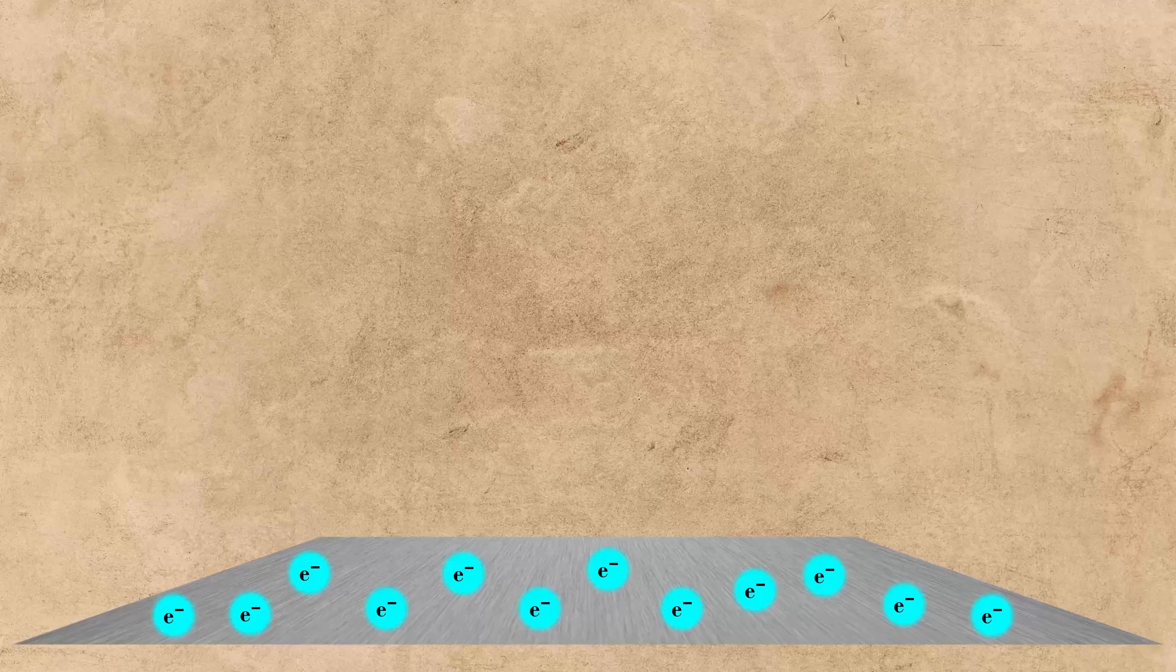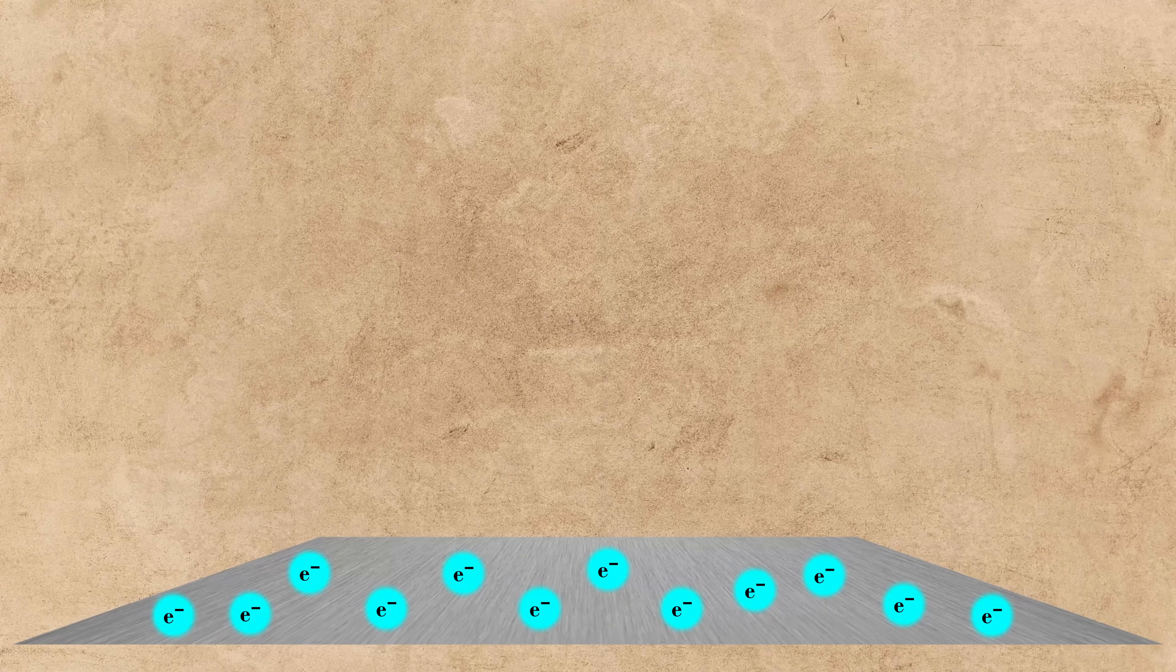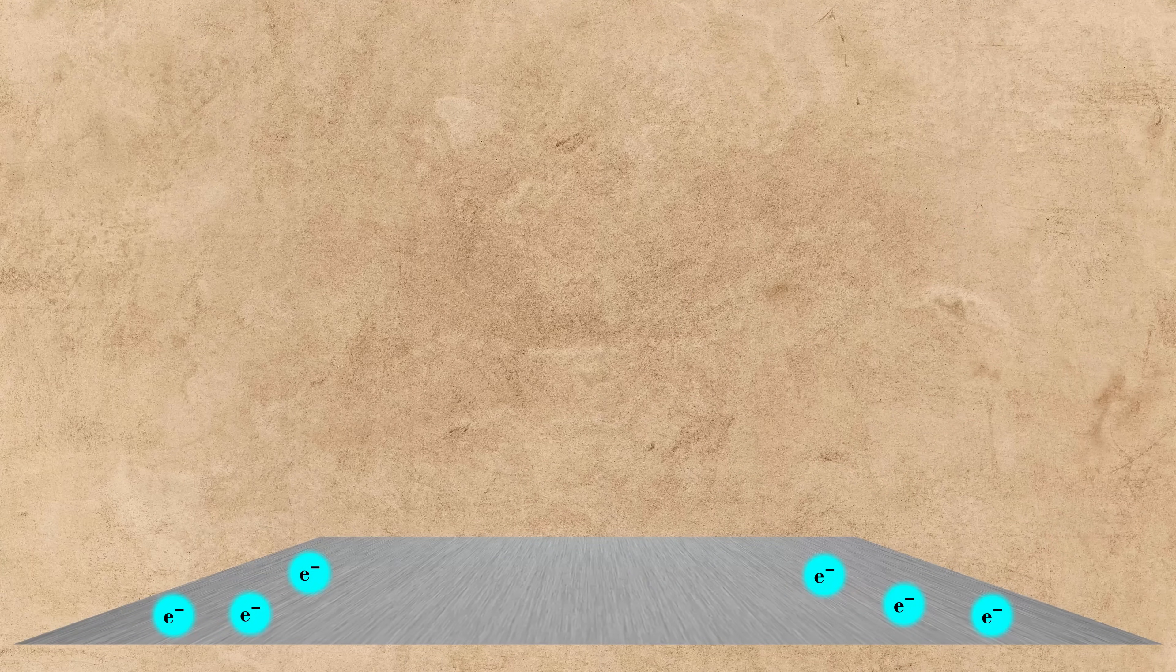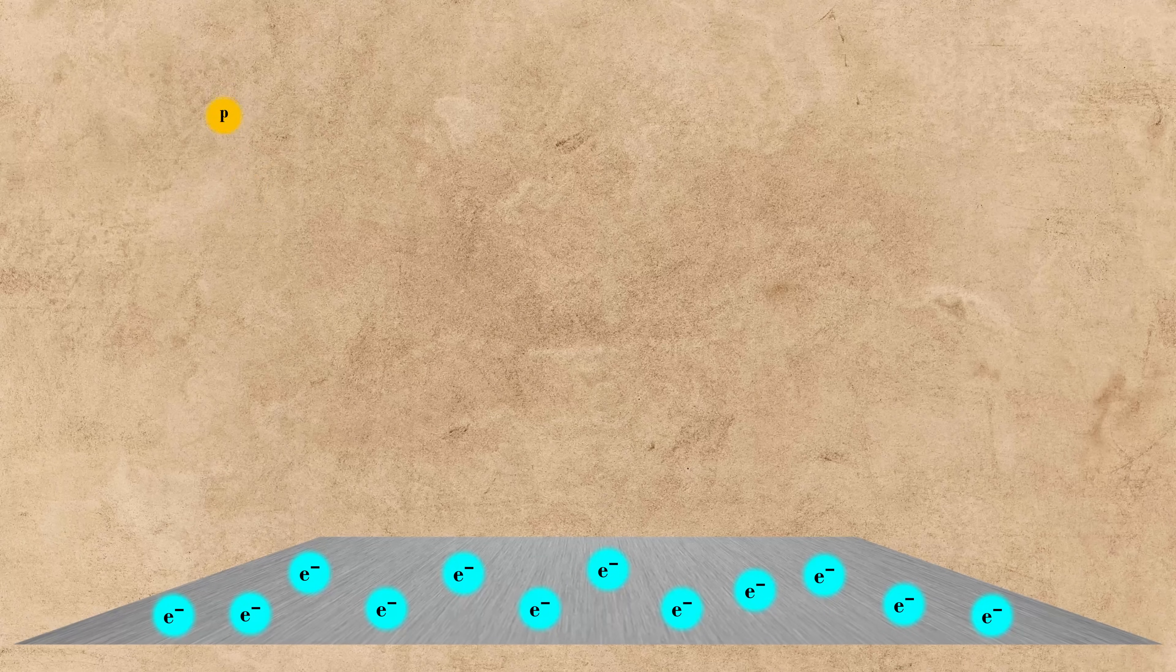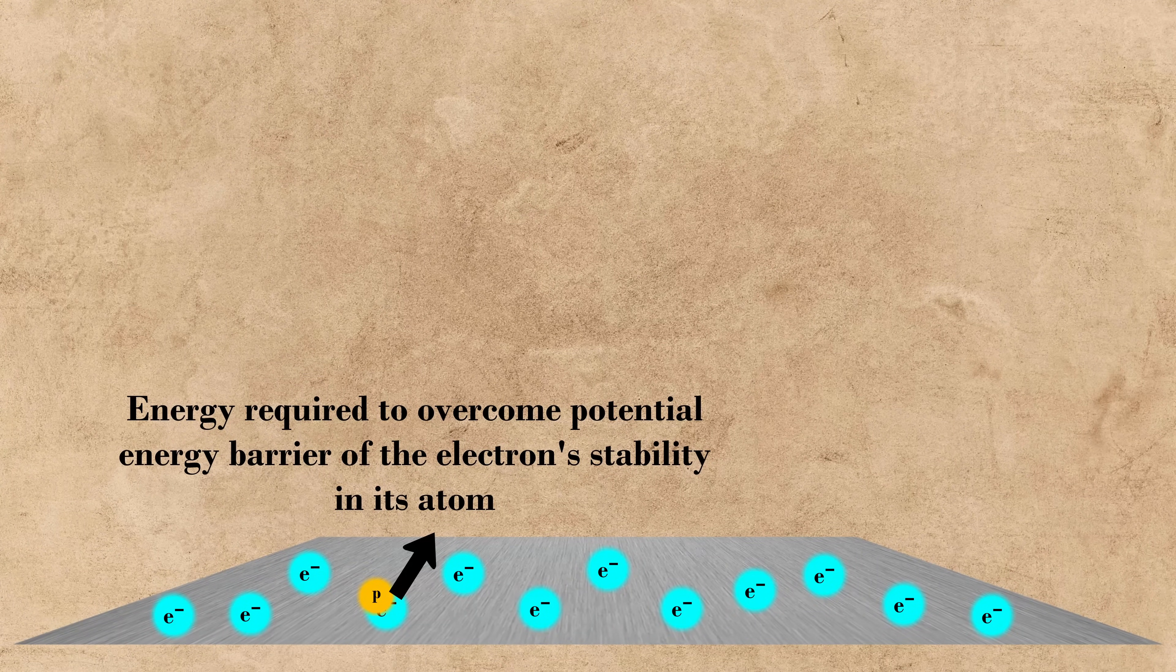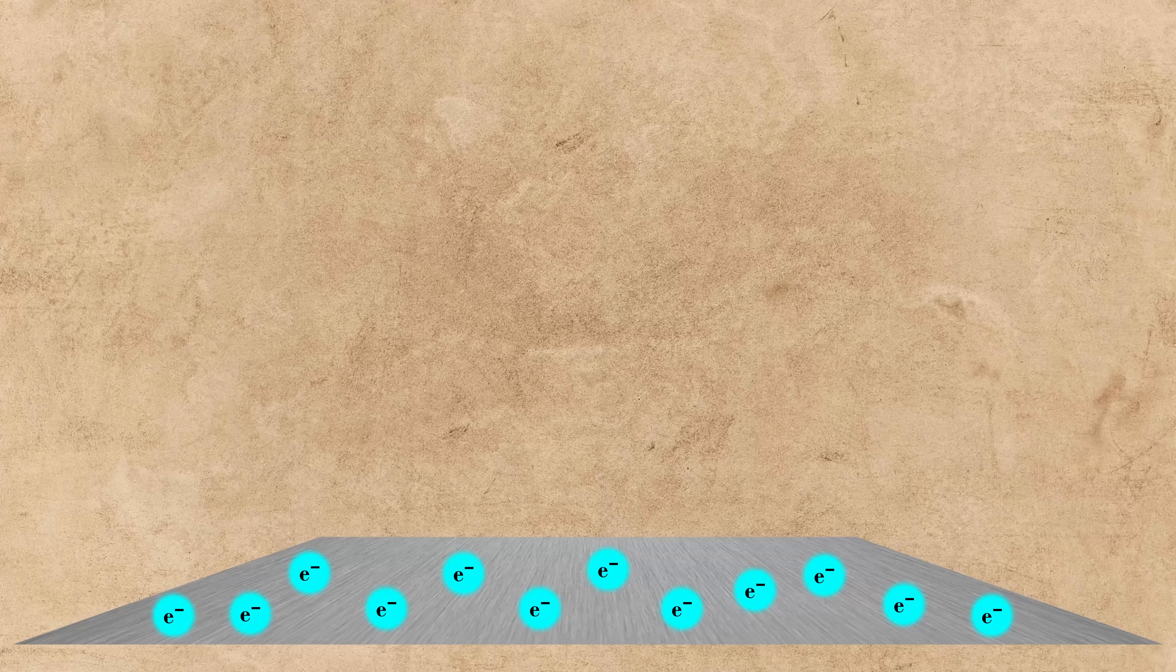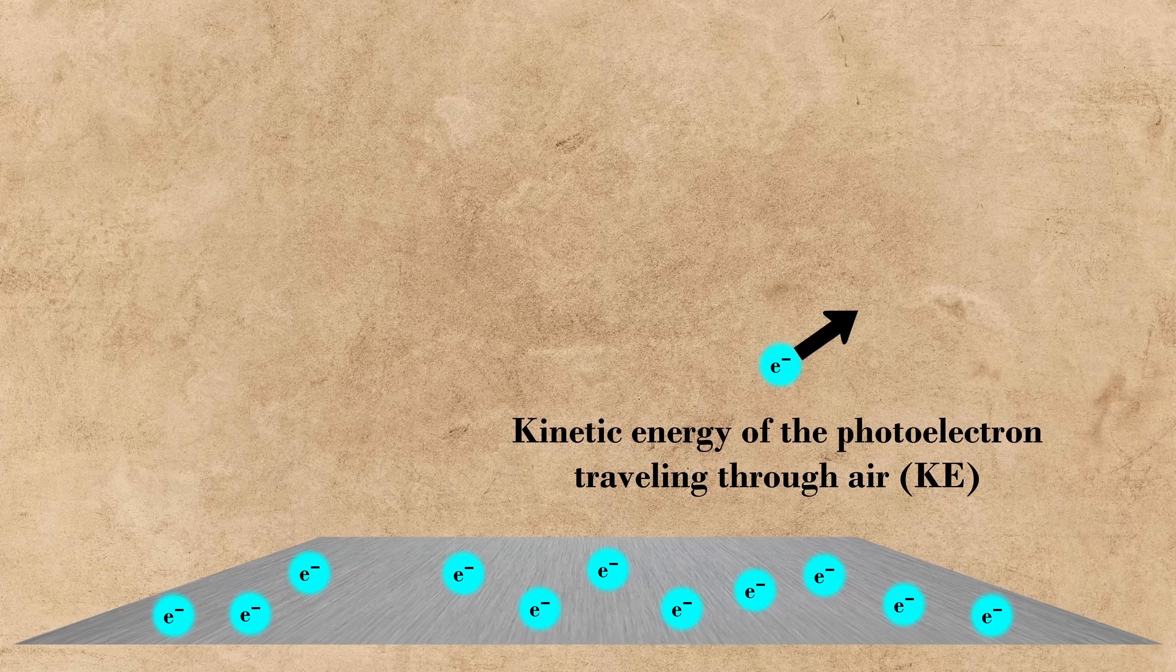To explain the photoelectric effect with light as a particle, Einstein postulated that so-called photons collide with photoelectrons and transfer energy to them in two forms. The first form of energy is that which is required to eject the electron from the atoms they exist in, which he called the work function. The rest of the energy transferred is in the form of the kinetic energy of the photoelectron as it travels freely through the air.